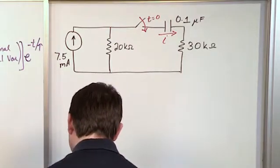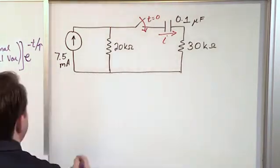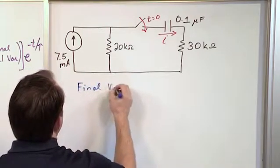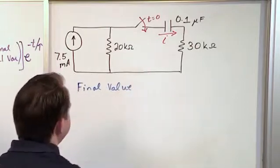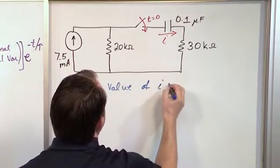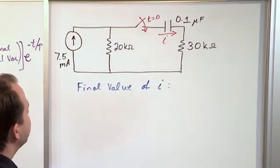So what we want to find out first is what is the final value, the final value of the variable of interest. We care about i, the current. So what do you think it would be?